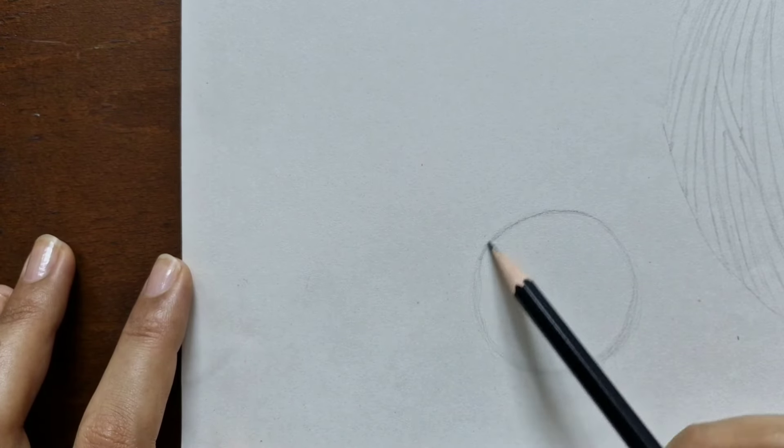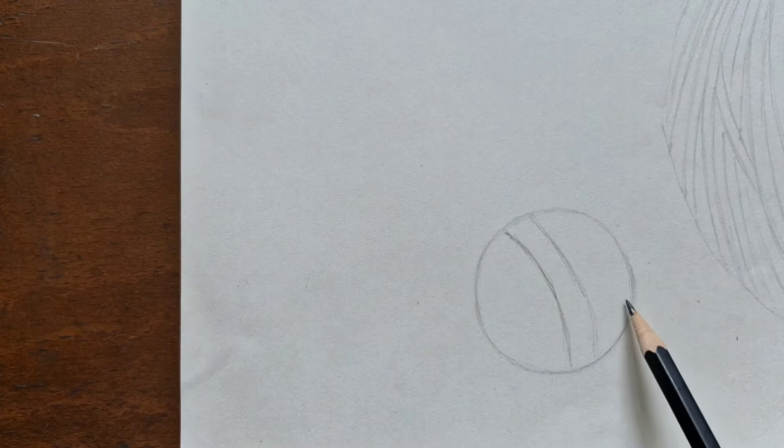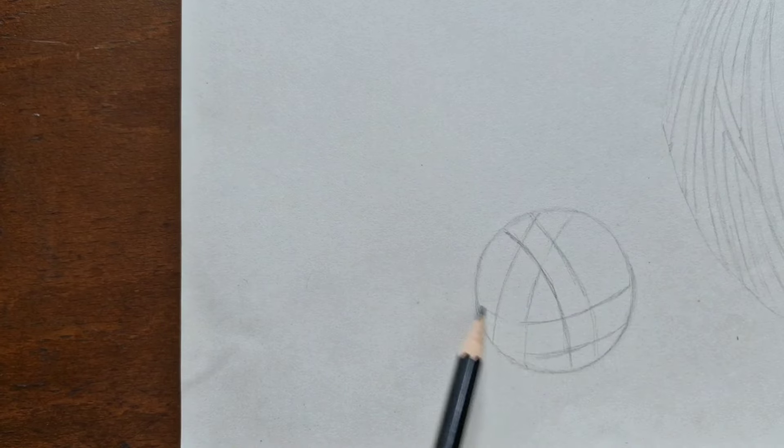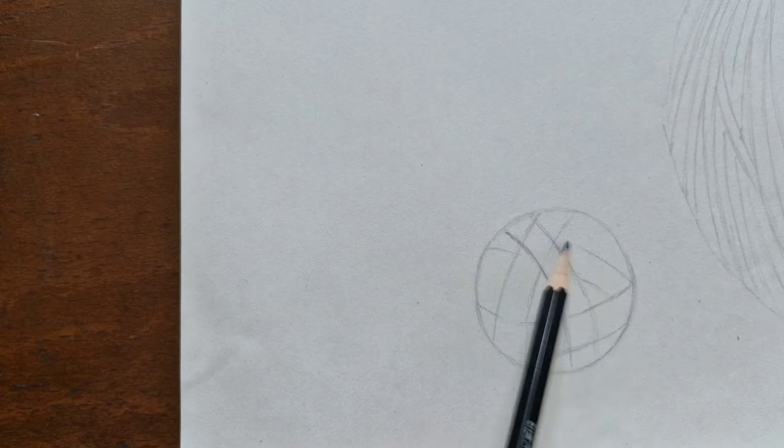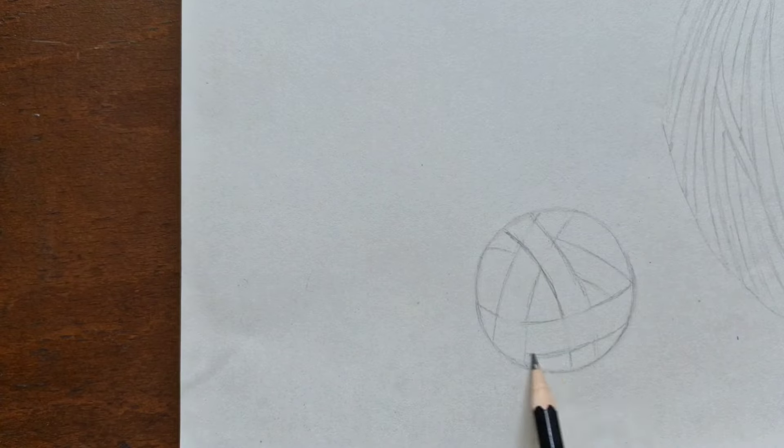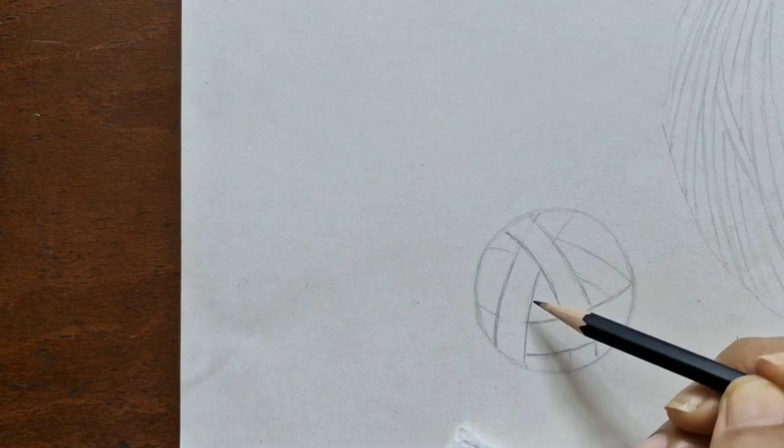Instead of drawing every single strand we can make things a bit quicker. Imagine you're drawing a whole bunch of threads together then filling in those lines with yarn details. Draw some lines that overlap then erase the ones that should be hidden underneath. This gives your drawing that cool depth and dimension showing how the yarn layers are built.